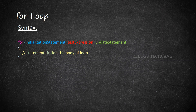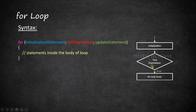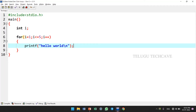First, the for loop. The for loop has an initialization statement, then a test expression and condition, and next an update statement. First, the initialization statement is executed. Then the test expression and condition are checked. If the condition is true, the loop body is executed. Next, the update expression runs and the statement is updated. Then the condition is checked again. If true, the loop body executes again. Then the statement is updated. If the condition is false, the loop exits.